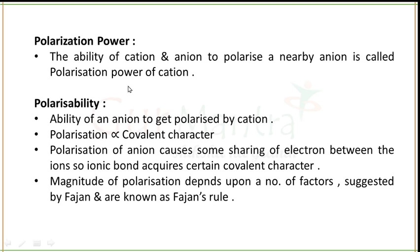An ionic bond is formed by the transfer of electrons, resulting in the formation of a cation and an anion. The cation formed distorts the shape of the electron cloud of the anion, and this distortion of the electron cloud of the negatively charged ion by the positively charged ion is known as polarization. The ability of a cation to polarize a nearby anion is called its polarization power. The term polarizability stands for the ability of an anion to get polarized by the cation. Polarization simply means seeing the covalent character in ionic compounds — polarization is directly proportional to the covalent character.